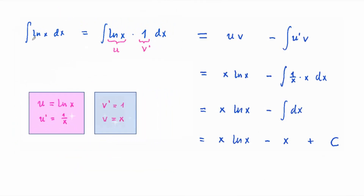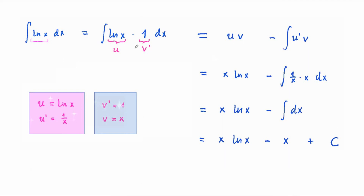Let us consider another example: to integrate the natural log function. We can rewrite this function as the natural log times the constant function 1. Now we can integrate this product by parts as shown below.